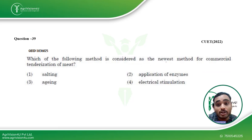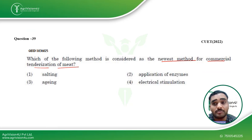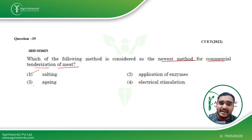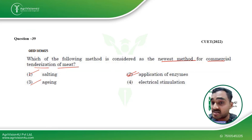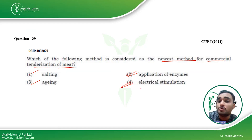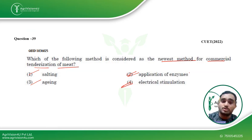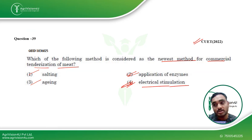Which of the following methods is considered the newest method for commercial tenderization of meat? We covered tenderization when discussing meat products and animal produce technology. Salting is one of the oldest methods; aging is the most traditional primary method. Then application of enzymes such as bromelain, papain, and ficin — extracted from papaya, figs, and pineapple — gave very appreciable results. Electrical stimulation is now being used in industries as a very commercial and new method for tenderization of meat. This was also asked in CUET 2022.